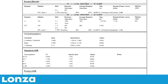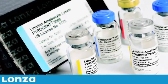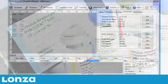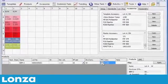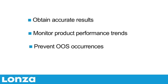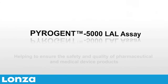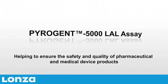The endotoxin concentrations for the unknown samples are then read from the standard curve. Our Pyrogent 5000 Kinetic Turbidimetric LAL assay coupled with our WIN KQCL software are the ideal system for endotoxin detection. Obtain accurate quantitative results when you need them. Monitor your product performance easily by using our built-in trending feature. This will allow you to detect deviations more readily so that you can respond before out-of-specification results occur. Pyrogent 5000 LAL Assay — helping to ensure the safety and quality of pharmaceutical and medical device products.